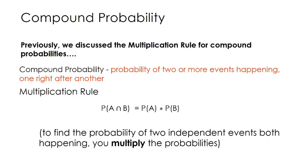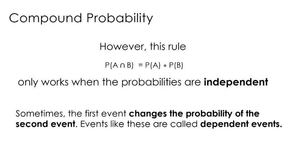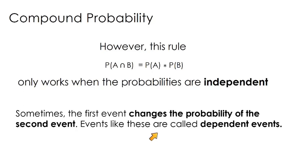This is all background knowledge — things that we previously learned. The thing I want us to know, and what we're pivoting to in this video, is that this rule — that the probability of A and B happening is just the product of their individual probabilities — only works when the probabilities are independent, meaning the first event doesn't affect the second event. Sometimes the first event happening is going to change the probability of the second event. Events like that are called dependent events. This is what we are focused on in this video, so let's practice identifying independent and dependent events.